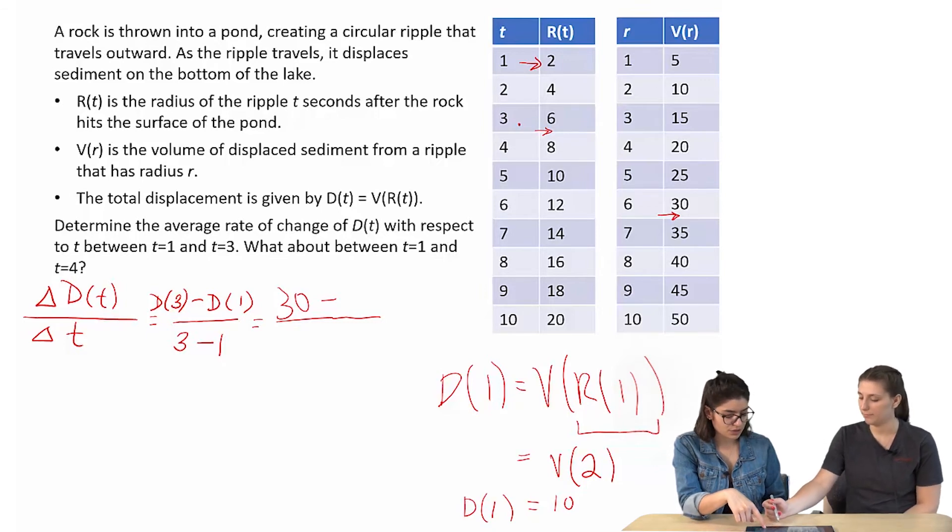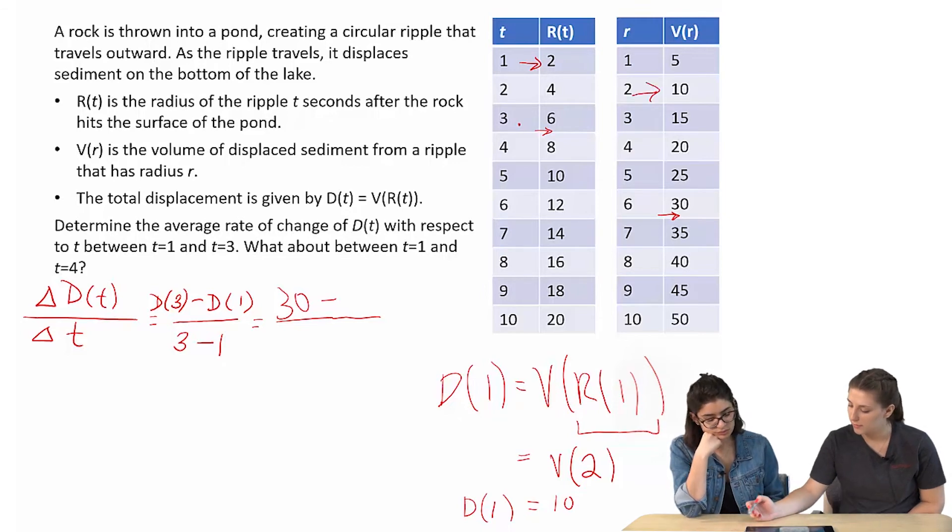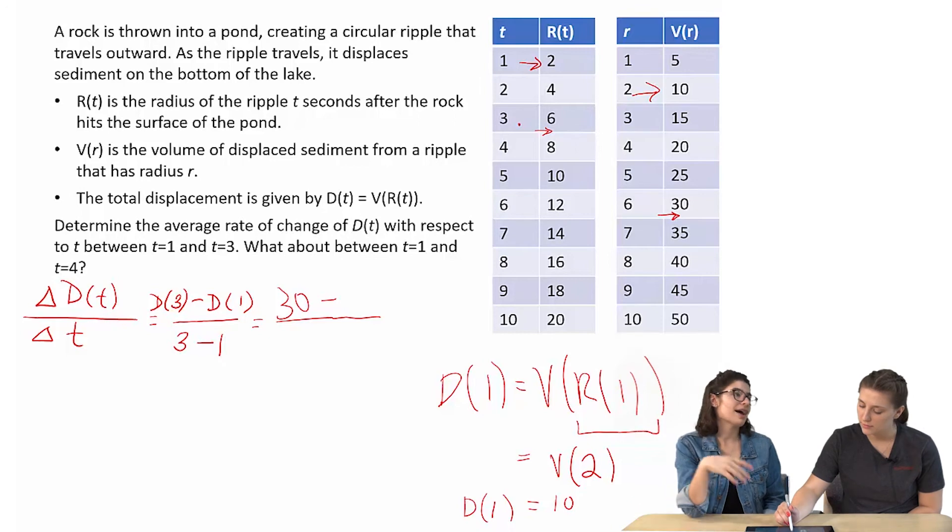So when I got 2, I had just done the R(1) to get 2. Okay. And replaced R(1) with 2. So now we're on V(2). Okay. V(2) is 10. So going way back, D(1) is 10. Right.